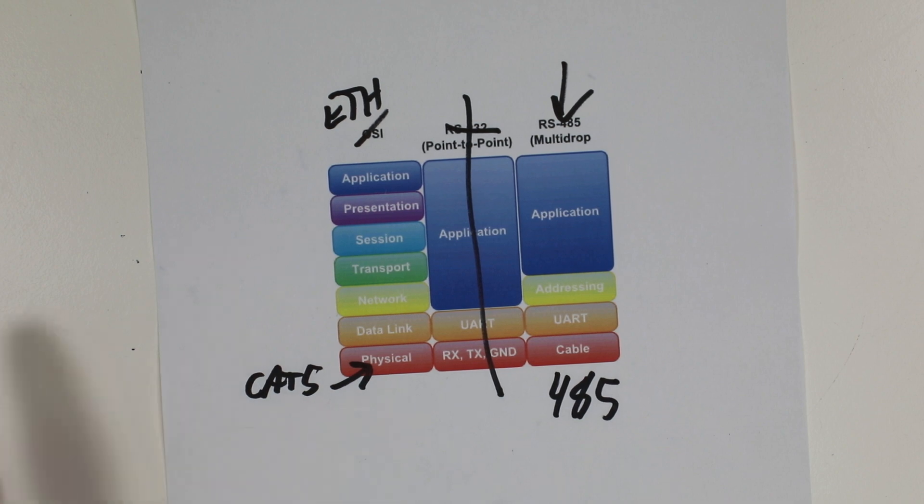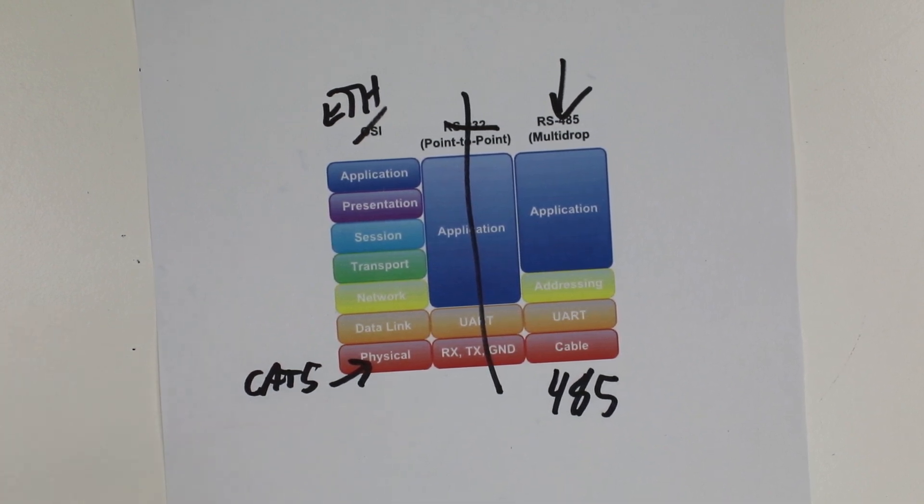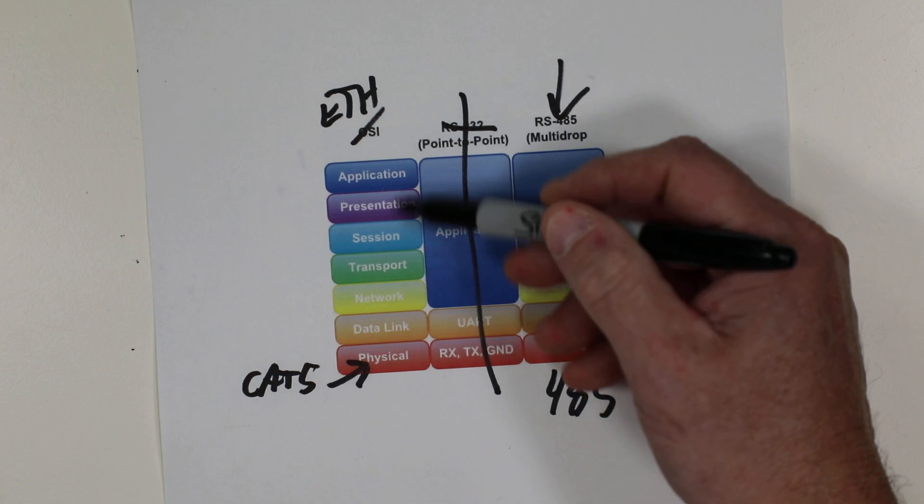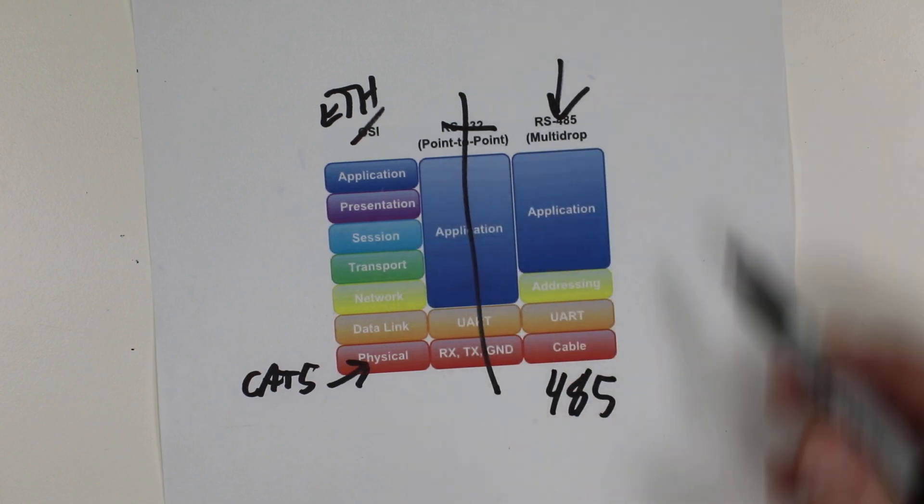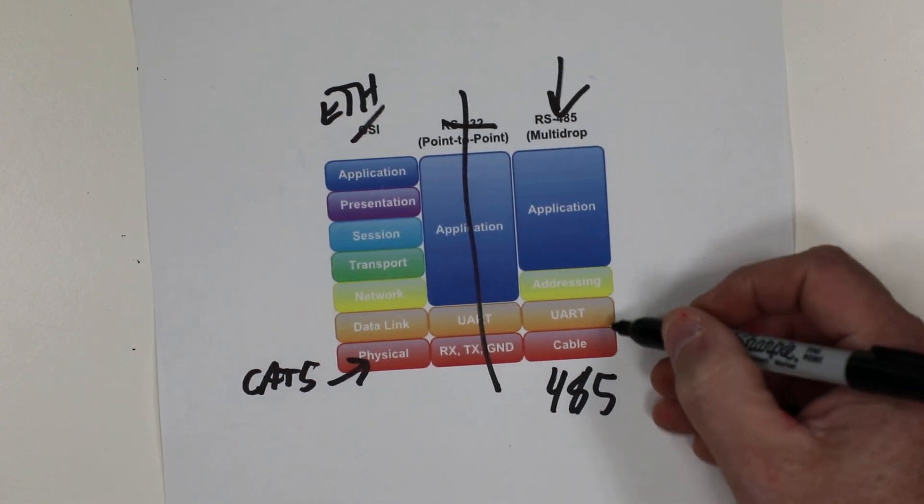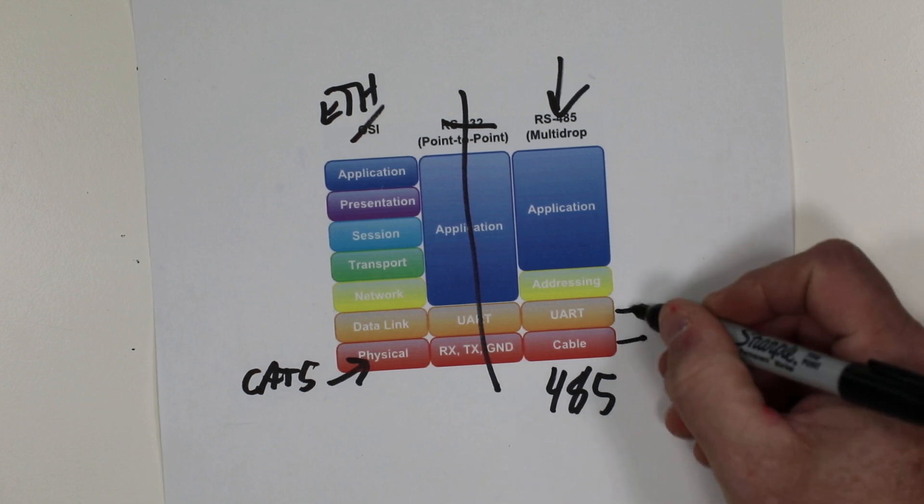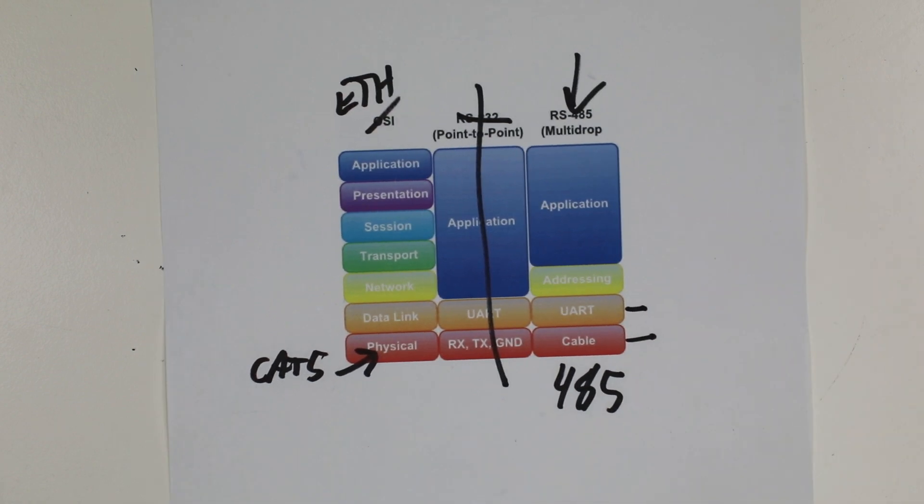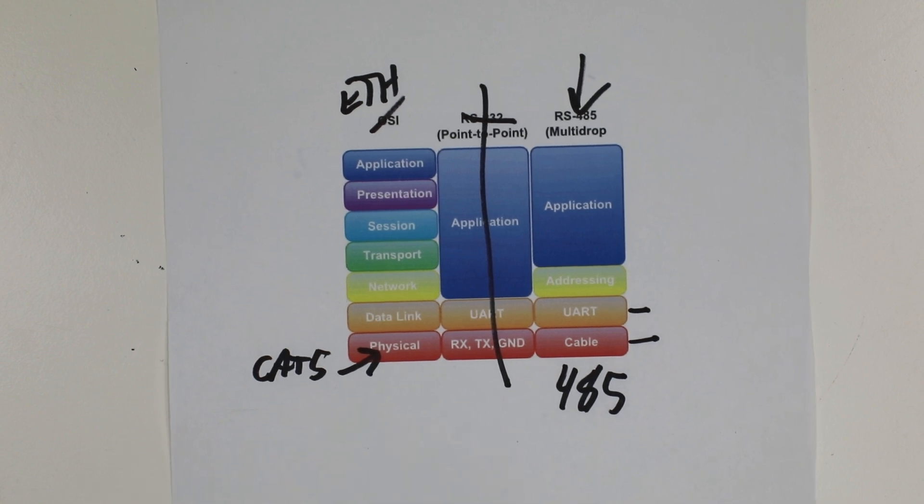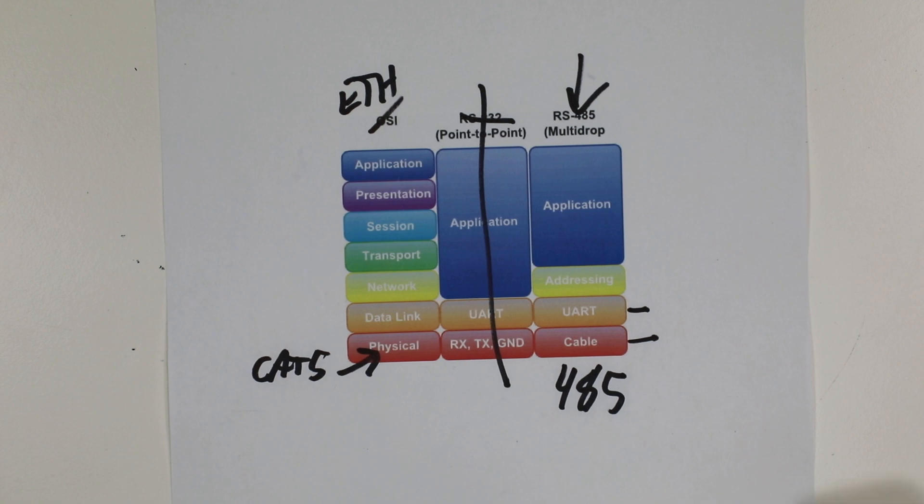So, RS-485 has a fairly simple system. You can see that there's a whole layer of sections missing here. And all we really have is a method of the physical layer and a method to transfer the data.